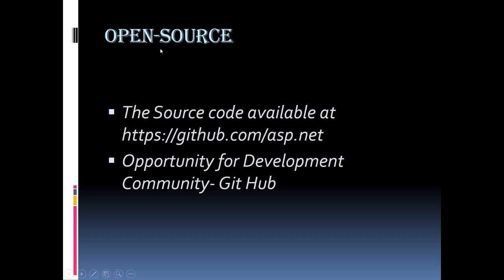ASP.NET Core Framework is open source. Microsoft mainly develops license-based software and platforms, but for the first time in Microsoft history it released this open source, cross-platform ASP.NET Core Framework. The source code is available on GitHub, and we can contribute to or download the source code from the respective repositories. It's a good opportunity for the development community.